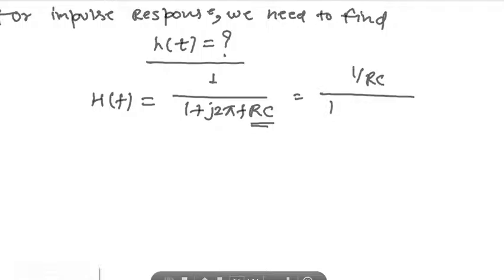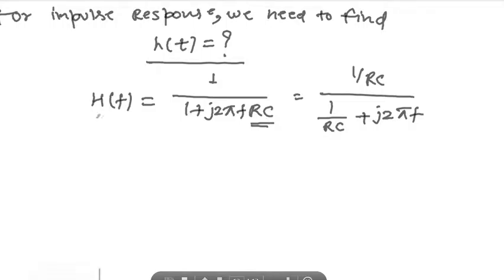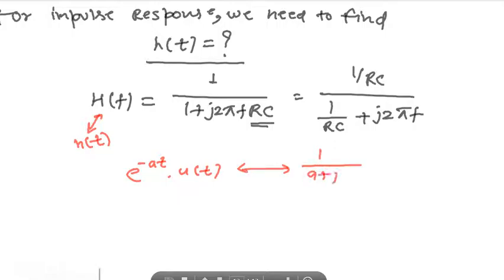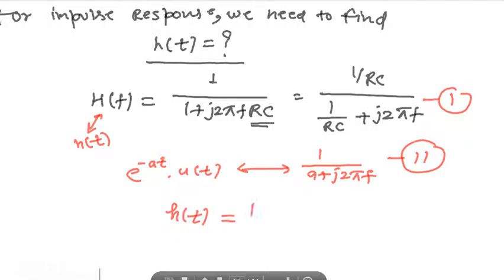Factoring out RC gives H(f) equal to (1/RC) divided by (1/RC + j2πf). We need to find h(t) as the inverse Fourier transform of H(f). We know the Fourier transform pair: e^(−at)·u(t) ↔ 1/(a + j2πf). Comparing, we get a = 1/RC, so h(t) = (1/RC)·e^(−t/RC)·u(t).